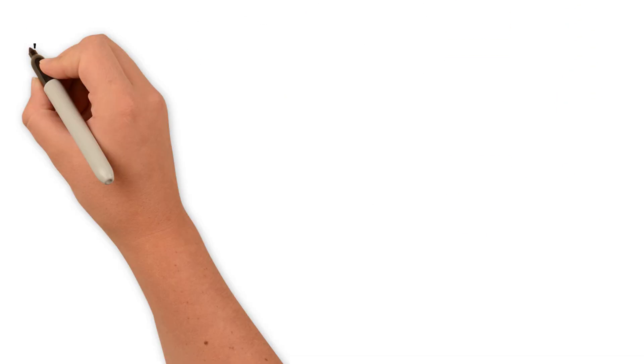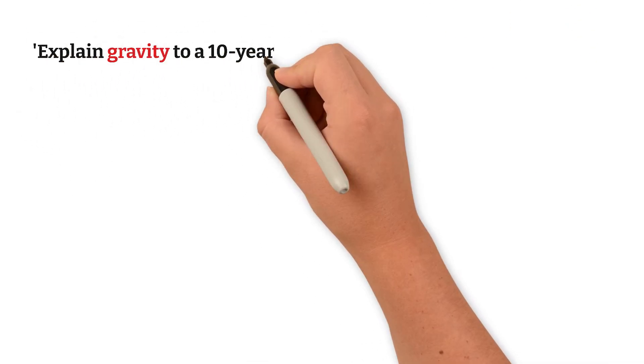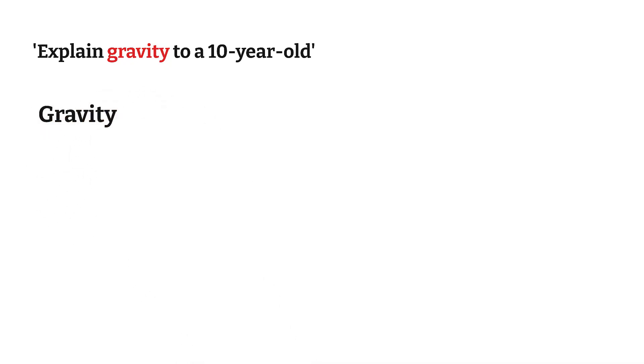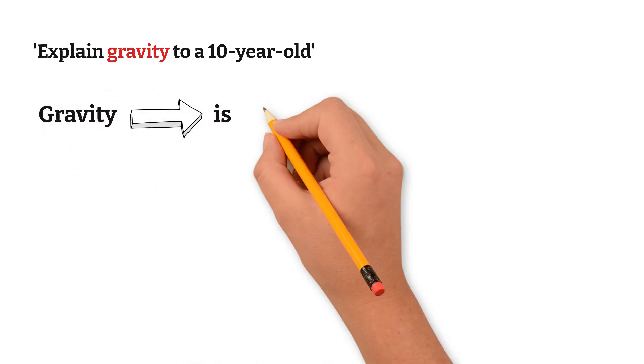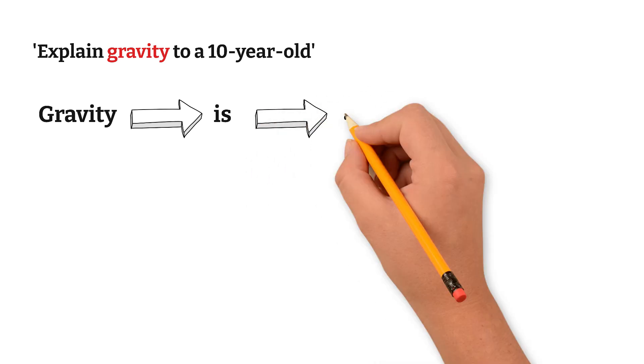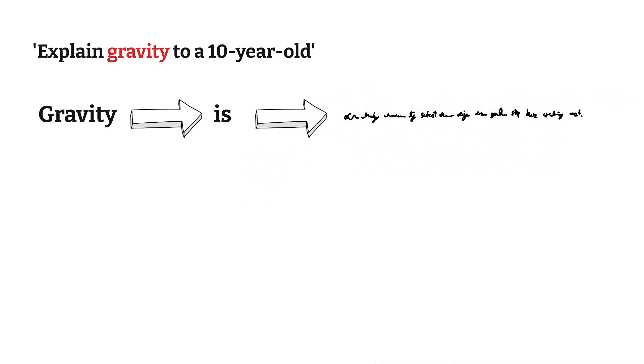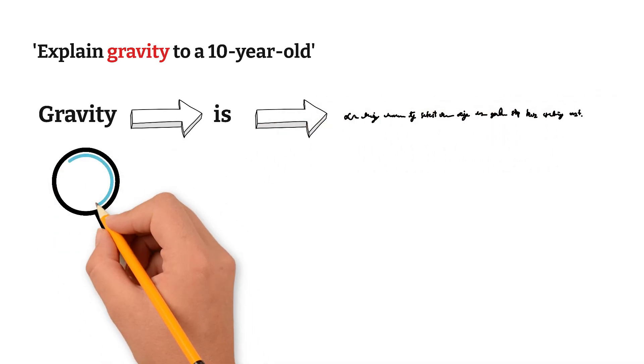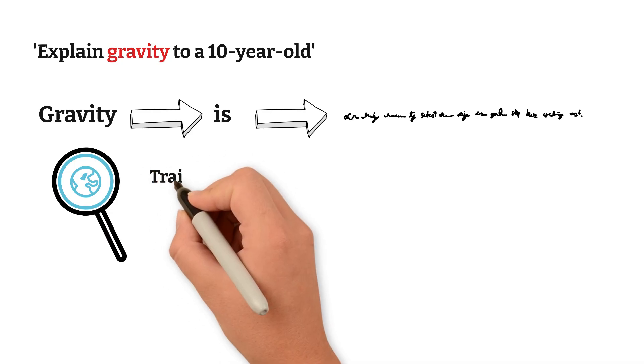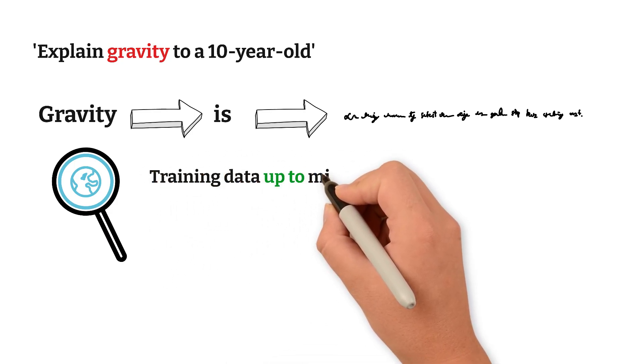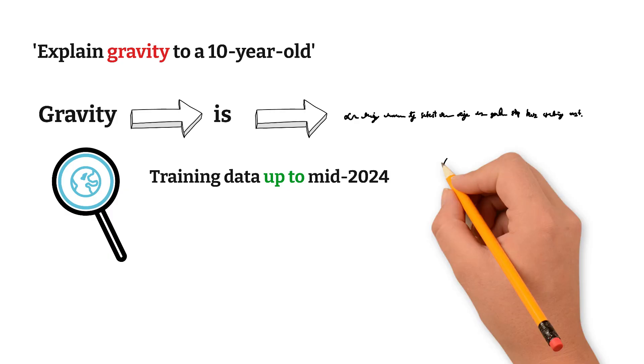And when you ask it to generate a text like, explain gravity to a ten-year-old, it builds the answer one word at a time, based on what it has seen during training. Just like very smart autocomplete. But it doesn't look up information online. It uses what it already learned before, from training data up to mid-2024.